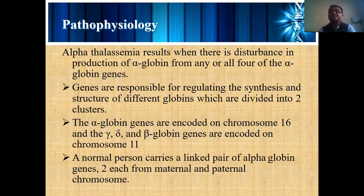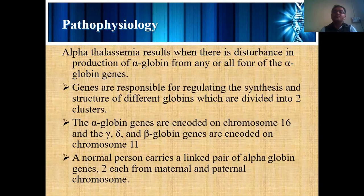If there is any change in the gene, it may cause an alteration that is not required, such as in the synthesis process. The alpha globulin genes are encoded on the chromosome — specifically, alpha globulins are present on chromosome 16. Gamma and Delta chains are also present there.